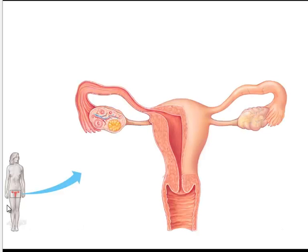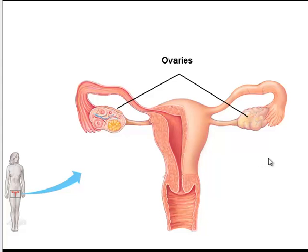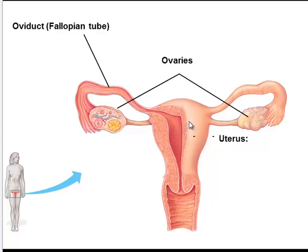Let's start by looking at the structures. Here we are zooming in on the female's anatomy. The female has two ovaries, one on either side of her pelvic region. These are adjacent to oviducts, which also go by the name of fallopian tube. The fallopian tubes, or oviducts, lead into the uterus, which then narrows in a region called the cervix, which then widens into the vagina.